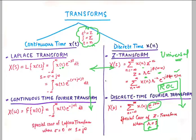This is how these transforms are classified and related to each other. Signals can be classified into two categories — continuous time and discrete time — and for both we have two transforms each: one universal transform and one special transform. That's how you can make sense of the transforms in your syllabus. I hope this quick video was of help. If you liked the video, give it a thumbs up and consider subscribing.